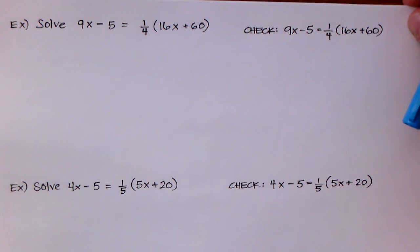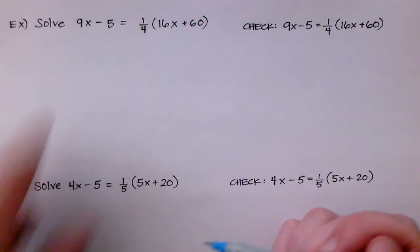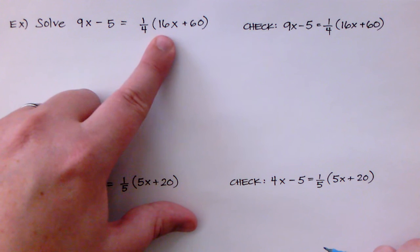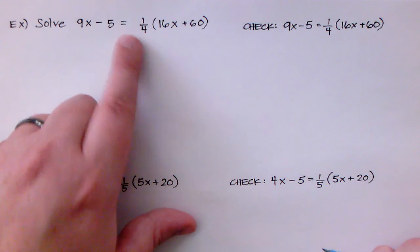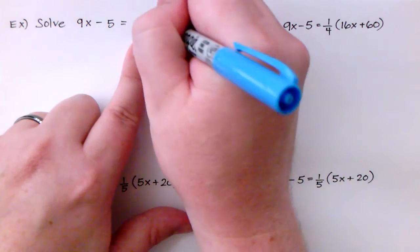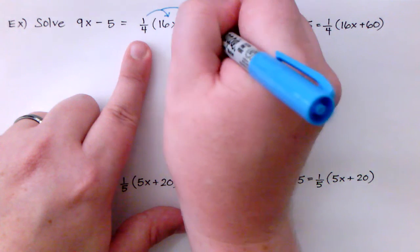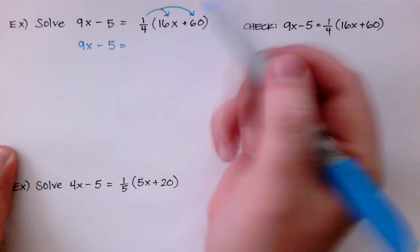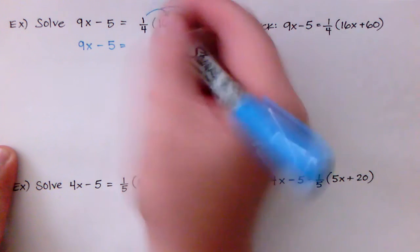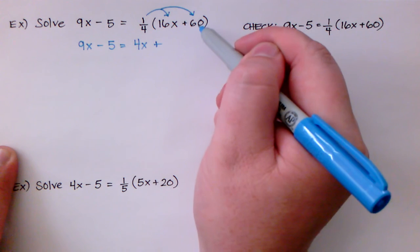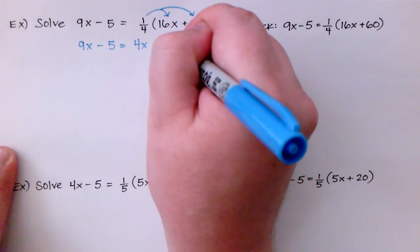Now this time I have a fraction. It says to solve 9x minus 5 which is equal to the fraction 1 fourth times the quantity of 16x plus 60. I have bigger numbers and I have a fraction. And what we did before is we multiplied both sides by the reciprocal to get the fraction by itself. But I'm going to show you this time that I can actually use the distributive property. Okay so 9x minus 5 is going to stay the same on the left-hand side. 1 fourth times 16x is the same as 16 divided by 4. So that leaves me at 4x plus 1 fourth times 60 is the same as 60 divided by 4 which is 15. Awesome.